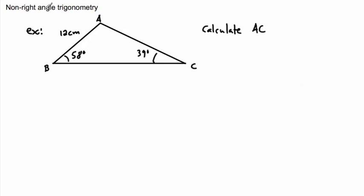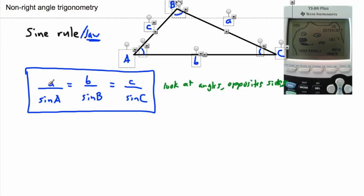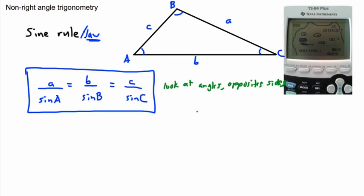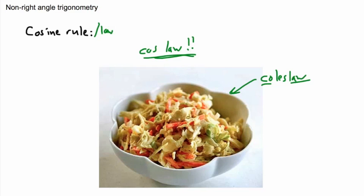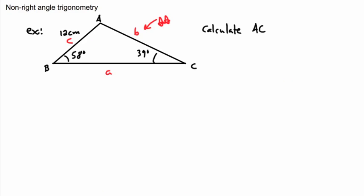So here's an example with a non-right-angled triangle. We have triangle ABC. We know one side and two angles. I need to find side AC, which I can label as little b. I know angle C and its opposite side c equals 12, and I know angle B equals 58 degrees. Since I have a side and its opposite angle, this calls for sine law.